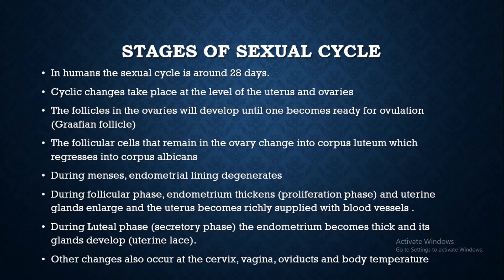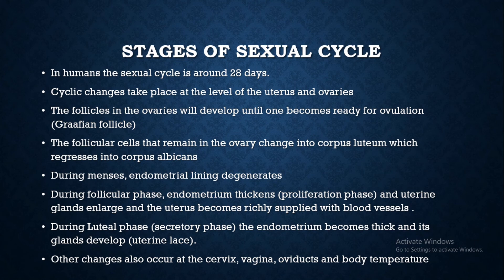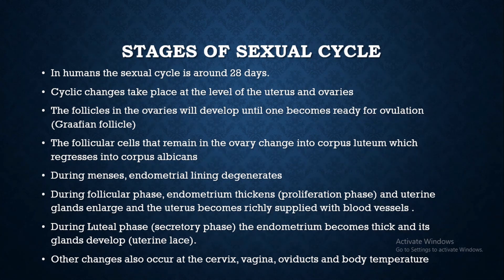The ovaries are the site of ovulation, and it is the site where folliculogenesis takes place as well. The follicles in the ovaries start to develop — around 10 follicles start to develop every month. Only one follicle succeeds to reach the graafian stage, becoming the graafian follicle, and only this follicle will rupture to release its egg cell at the day of ovulation. The follicular cells that remain in the ovary will change into the corpus luteum. If no fertilization has taken place, they will regress into the corpus albicans, which will degenerate and totally disappear at day 28, marking the end of this cycle and the start of another cycle.